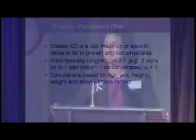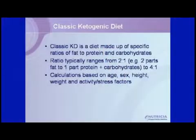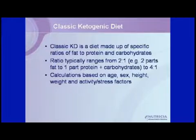The classic ketogenic diet is a ratio-based diet prescribed in ratios ranging from 2:1 to 4:1. Usually kids get up to a 4:1 diet, sometimes a 3.5:1 diet. That ratio refers to the ratio of fat to proteins and carbohydrates combined.